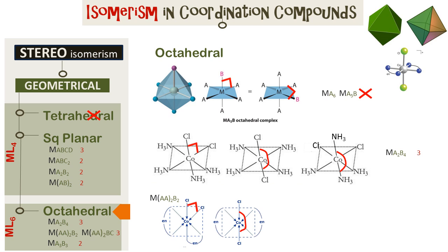In complex MA2B2 where AA2 is EN (ethylenediamine), we see that Cl and Cl have a 90 degree angle in one isomer, and between the two Cl ligands there is a 180 degree angle in the other. So such complexes show two isomers.